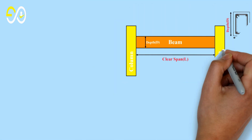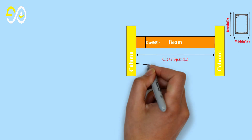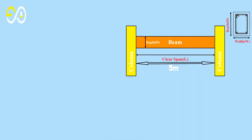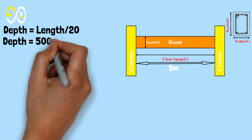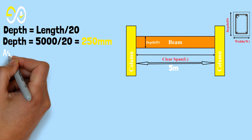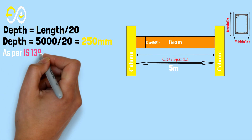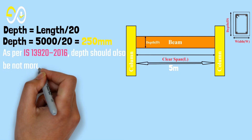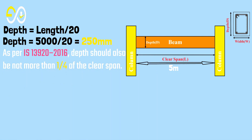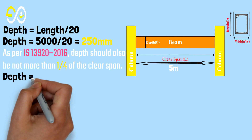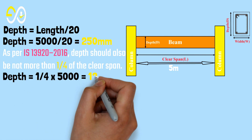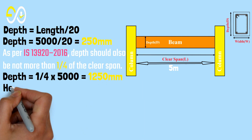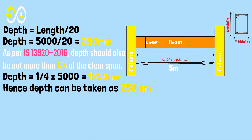Example 2: If the length of the simply supported beam is 5 meters, then what should be the minimum depth and width of the beam? Depth equals length over 20, so depth equals 5000 over 20, which equals 250 millimeters. As per IS 13920:2016, depth should also be not more than 1 over 4 of the clear span, so depth equals 1 over 4 times 5000, which equals 1250 millimeters. Hence, depth can be taken as 250 millimeters.